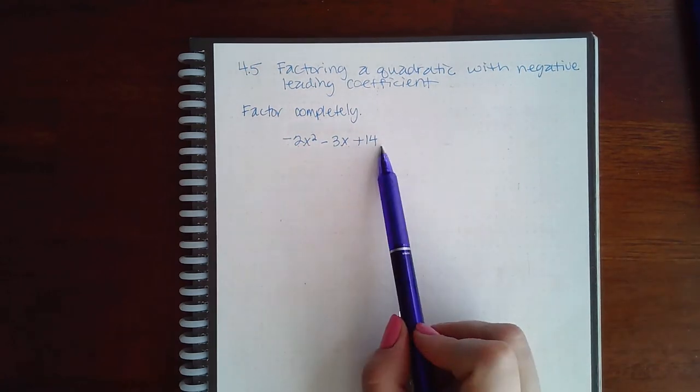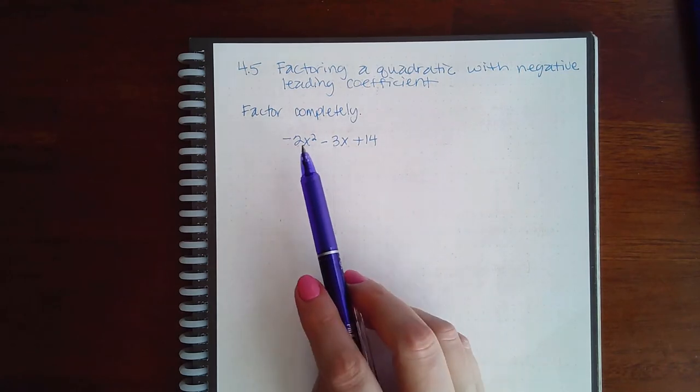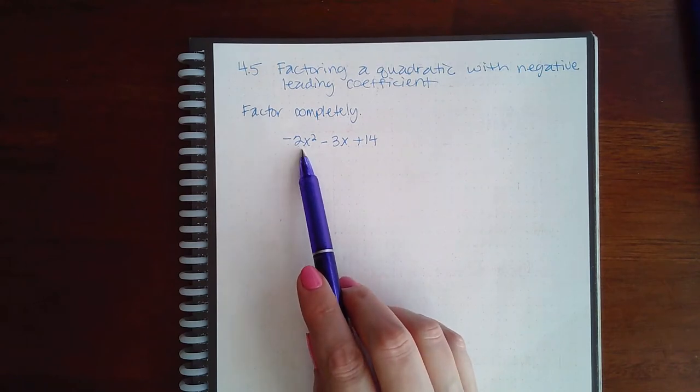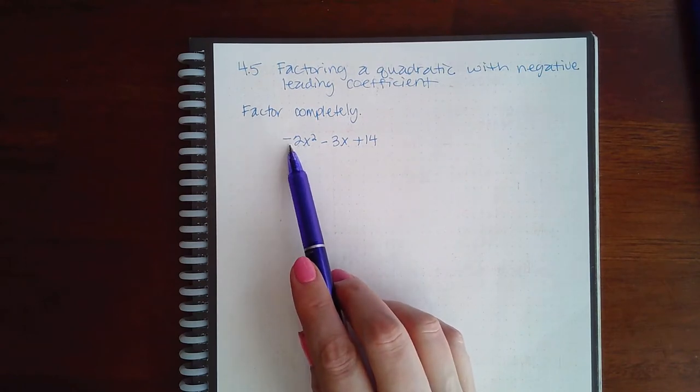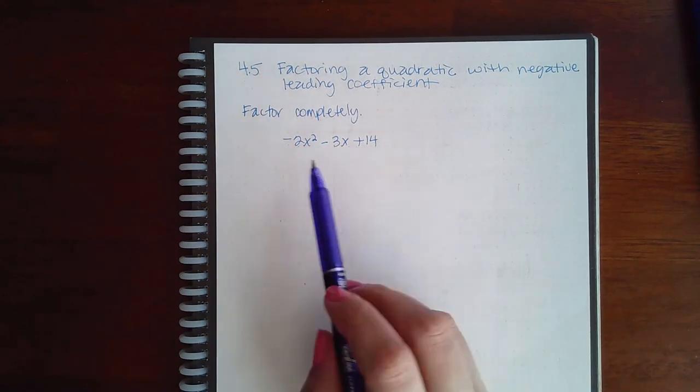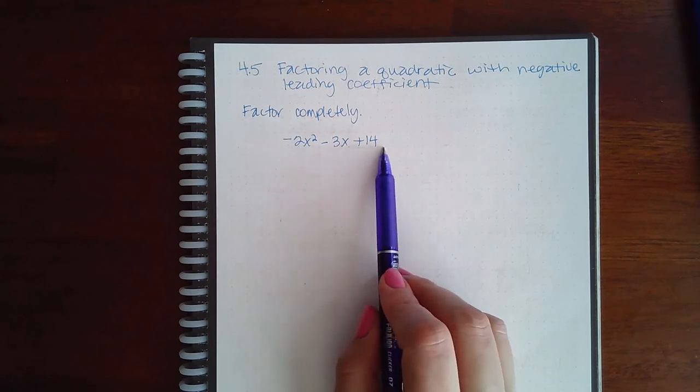When it's in that decreasing form, then you can look at the first coefficient. If the first coefficient is negative, you are forced to factor out that negative. Now while you're factoring out that negative, you can also factor out the GCF. It's part of the GCF.